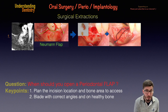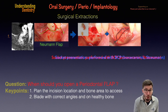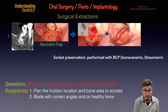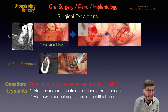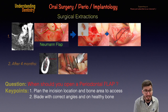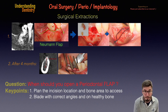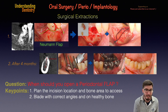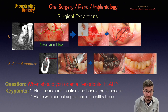After the surgical extraction, we grafted the socket with a socket preservation procedure, as this was part of an implant planning case. You are now seeing the implant planning and implant placement surgery on the healthy bone, resulting in a rehabilitation of three splinted implant-supported single crowns.